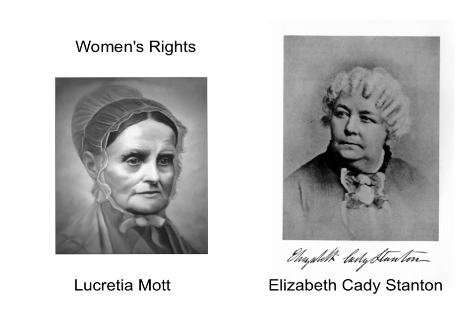The women's rights movement grows out of the abolitionist movement, and several significant women rise to the forefront, including Lucretia Mott and probably the most significant leader, Elizabeth Cady Stanton. It was these two women who helped bring together the first meeting to push for more women's rights and equality, which met at the famous Seneca Falls Convention in New York in 1848.